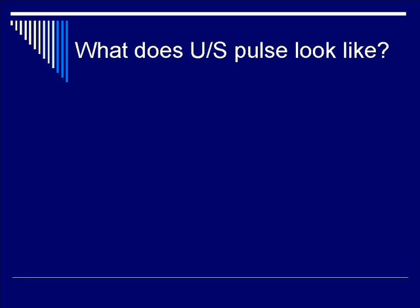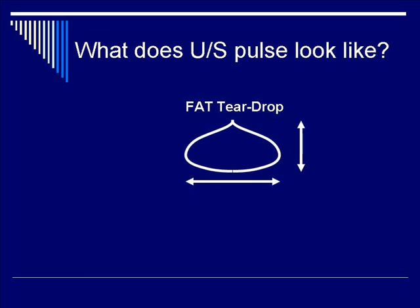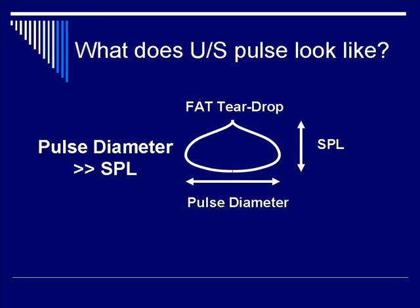Just as we can describe an ultrasound pulse in the frequency domain in terms of bandwidth or resonant frequency, or in time as a pulse duration, we can also describe an ultrasound pulse spatially — as a teardrop. A fat teardrop is an apt description of the spatial ultrasound pulse in two dimensions. You have the horizontal dimension, which is the pulse diameter, and the vertical dimension, which is the SPL or spatial pulse length. In general, the pulse diameter is much greater than the SPL. Since SPL is proportional to pulse duration, pulse diameter is much greater than pulse duration.